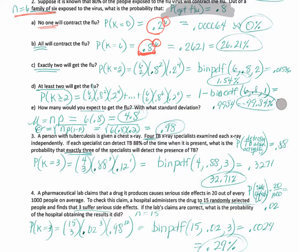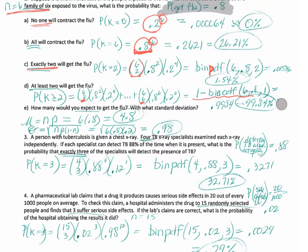C says exactly two get the flu — exactly this or exactly that, PDF is where it's at. So this is a binomial PDF of 6 choose 2: 0.8 to the 2nd, 0.2 to the 4th, computed with binomial PDF. D says at least 2. If there's at least 2, then you want 2 up to 6 — a sequence. Our calculator does not have the ability to section off 2 to 6, so it's 1 minus the accumulation of the bottom section: 1 minus binomial CDF of 6, 0.8, 1.